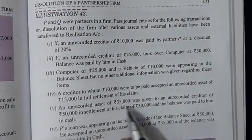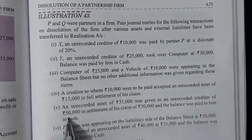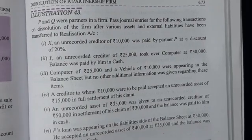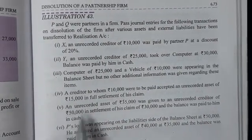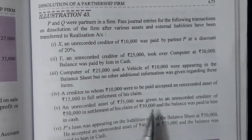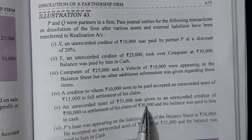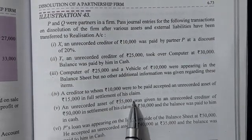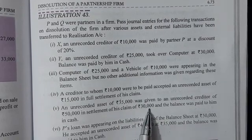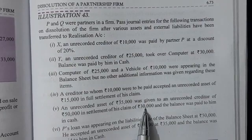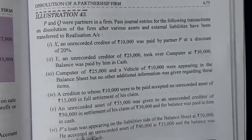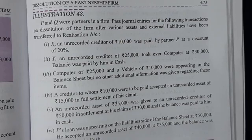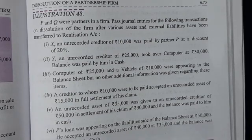Fifth transaction: an unrecorded asset of 35,000 was given to an unrecorded creditor of 50,000 in settlement of 30,000 of his claim, and the balance was paid in cash. What matters is not what the asset is worth physically but how much claim it settles — here it settles 30,000. The remaining 20,000 of the creditor's claim must be paid in cash. So bank is credited and realization account is debited: Realization Account Dr. to Bank Account.